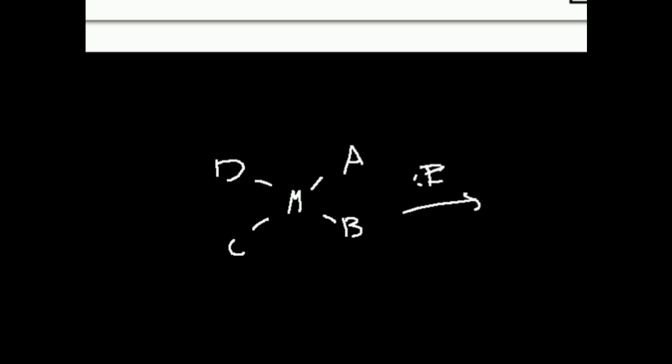My question to you is, where will E add? In other words, which ligand will it displace, assuming I'm going to tell you which one of these is highest on the trans-effect series? Let's suppose B is highest on the trans-effect series. Where will E add? If B has the highest trans effect, then E will displace D because D is trans from B.